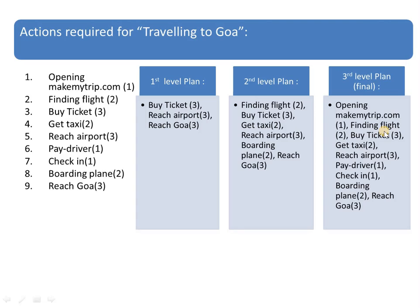Moving on to the second level plan, what you can see is: finding a flight, buying the ticket again, getting a taxi, reaching the airport, boarding the plane, reaching Goa. Again, reach Goa, reach airport, and buy ticket appear here. Why? Because I am giving some more details to these tasks in the second level plan. So I have to find the flight, I have to buy the ticket, I have to get the taxi, I have to reach the airport. For reaching the airport I have to get a taxi, and for getting into the flight I obviously have to buy a ticket.